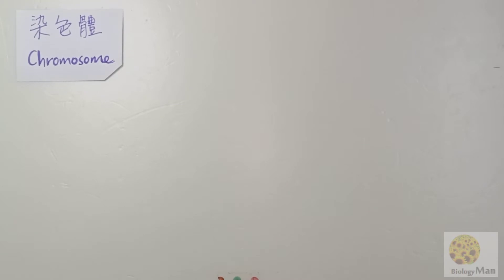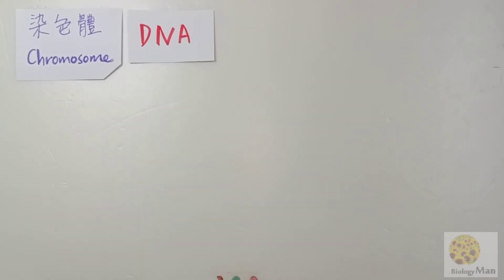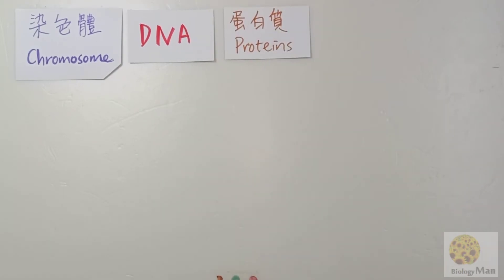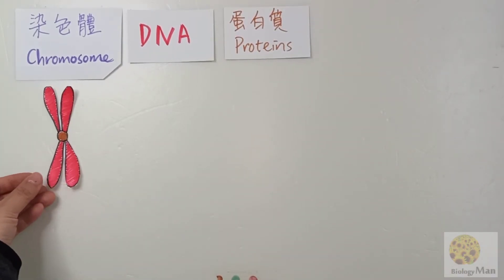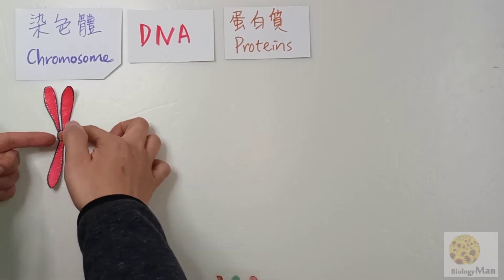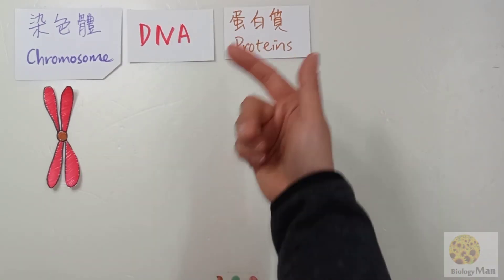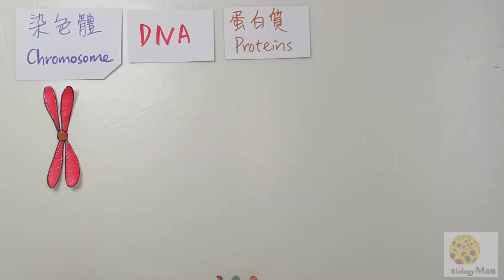First of all, I would like to talk about what a chromosome actually is. It is very simple — a chromosome is DNA plus protein. On the book you always see this X structure to represent a chromosome, and you always see a circle in the center. But how do DNA and protein form a structure like this?